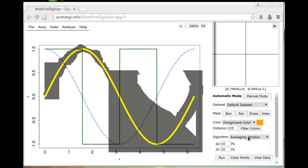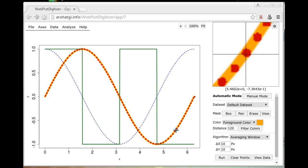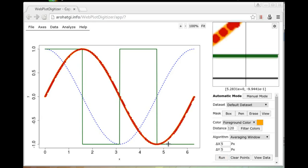There are a few options available and the averaging window algorithm is the default algorithm. And this is usually the one that you will end up using. There are two parameters in this case, delta X, delta Y. To start off, just leave them at the default values and click run. You will notice that in this case, the extraction algorithm actually did a pretty good job. But in some cases, you will have to adjust these parameters to increase or decrease the spacing between the detected points.